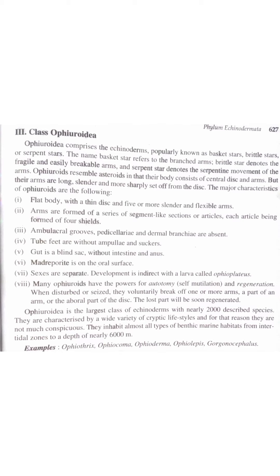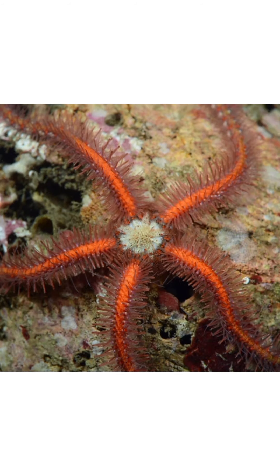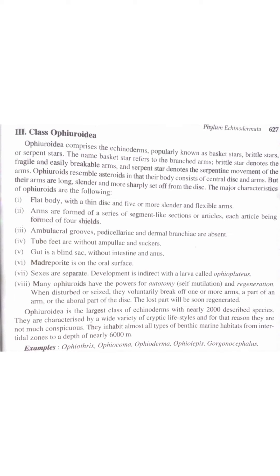Ophiuroidea is the largest class of Echinodermata with nearly 2000 described species. They are characterized by a wide variety of cryptic lifestyles and for that reason they are not much conspicuous. They exhibit almost all types of marine habitats from intertidal zones to a depth of nearly 6000 meters. Examples are Ophiopteryx, Ophiocoma, Ophiolepis, and Ophioderma.